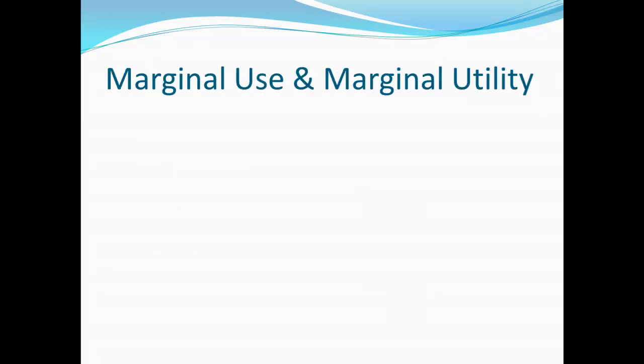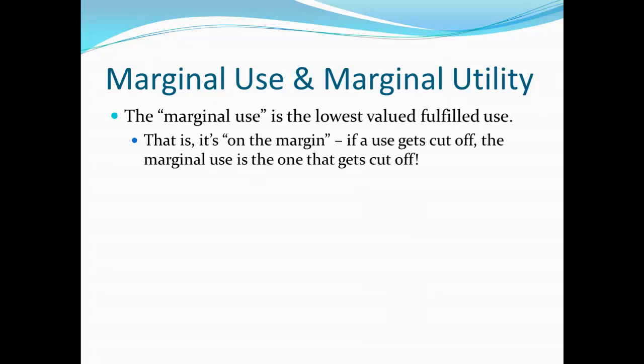Here I want to pull in what we call the marginal use and marginal utility. Marginal use is really just the lowest valued fulfilled use — it's the one that's on the margin. So if a use gets cut off, the marginal use is the one that gets cut off. For example, suppose I have three pairs of socks. Sensibly, based on my value scale, I'm going to first wear a pair, second wash a pair, and third make sock puppets. Now of those, the lowest valued one is making sock puppets. So if something were to happen — say I lose a pair of socks, perhaps in the dryer — I'm going to take the pair I was using for sock puppets and throw them in the wash. The sock puppets are the use I will give up — it's on the margin.